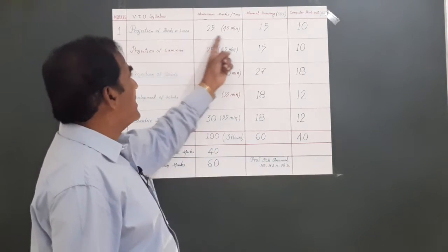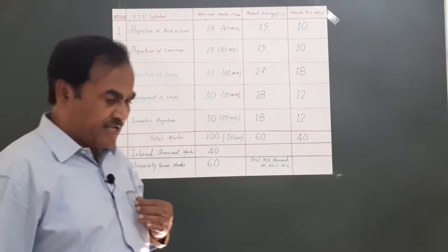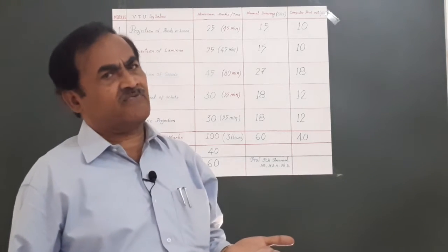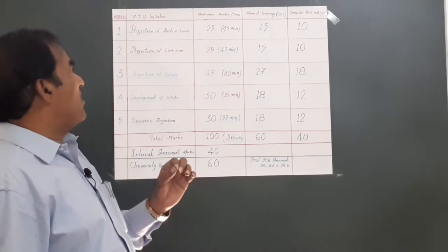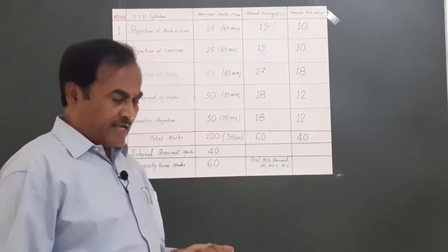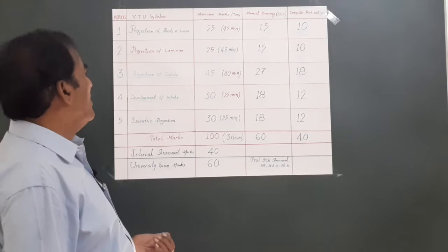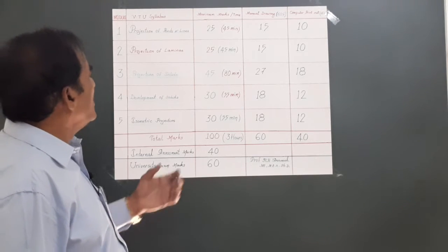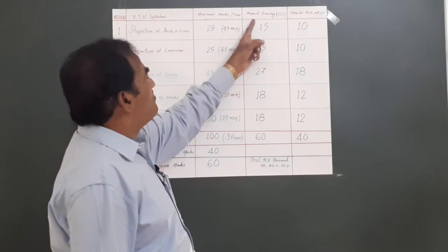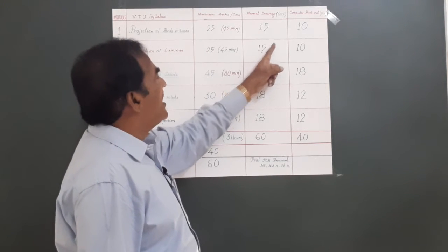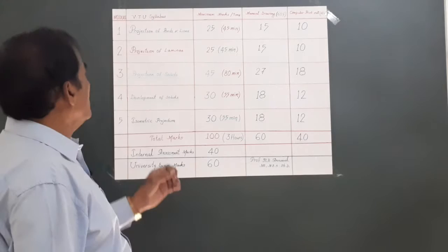When you come to the second module, we have the projection of laminae. Lamina is nothing but a plane surface or a thin plate - pentagonal lamina, hexagonal lamina, circular lamina, triangular lamina, semicircular lamina, and so on. This also carries 25 marks: 15 for manual drawing and 10 for computer printout.